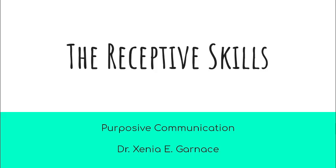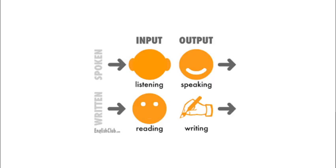Hello everyone. My lecture for today will focus on the receptive skills in communicating. As you can see in the diagram, there are four macro skills that we need to enhance in communicating: listening, speaking, reading, and writing. Spoken communication covers listening and speaking, whereas written communication centers on reading and writing.